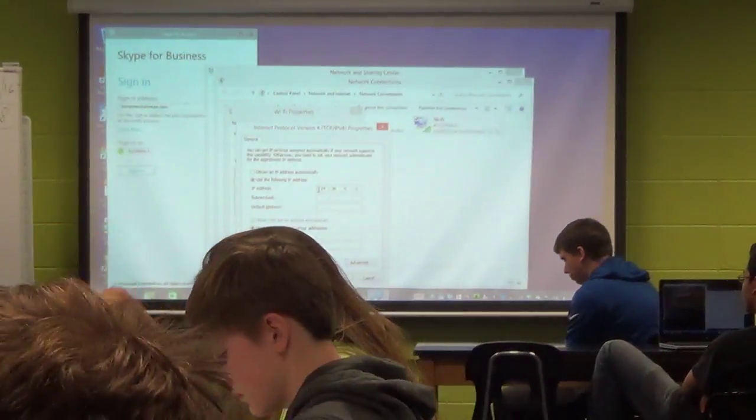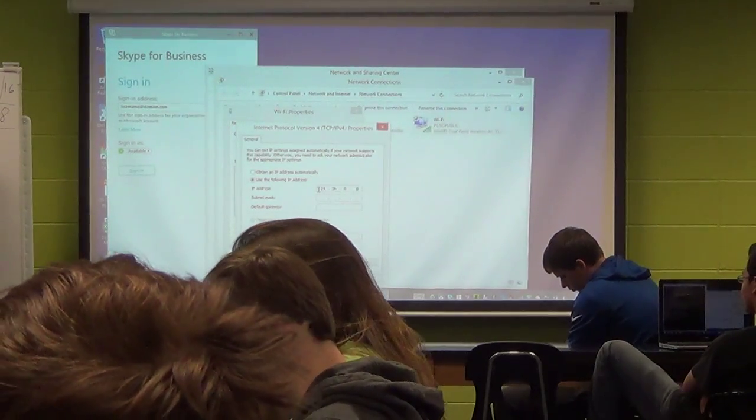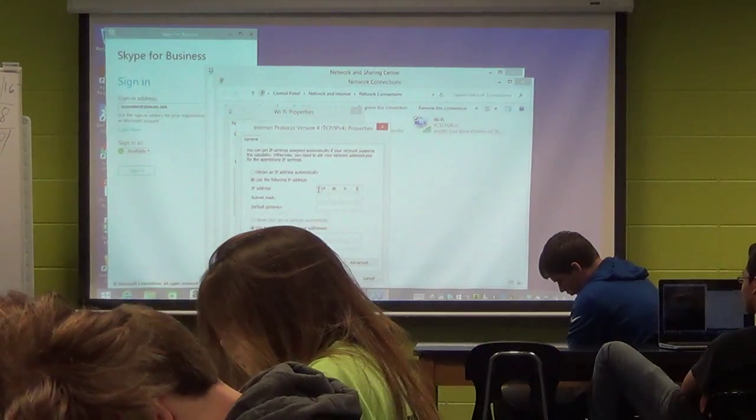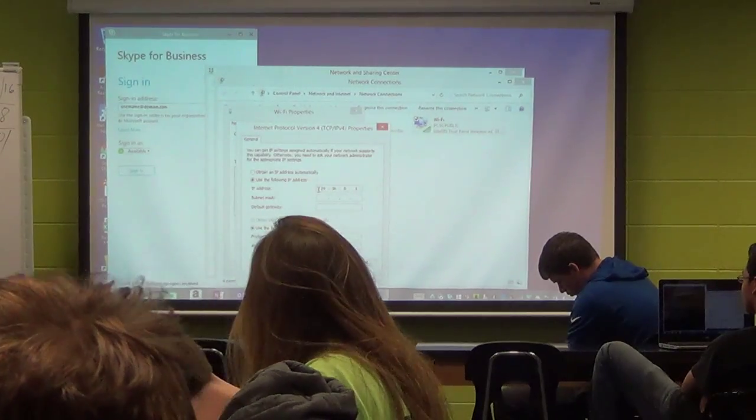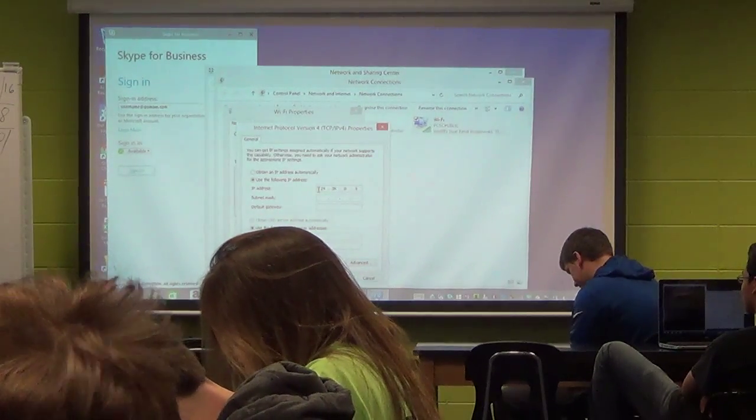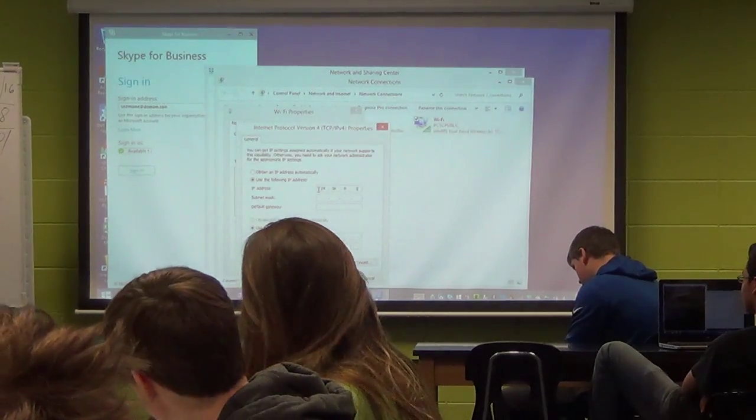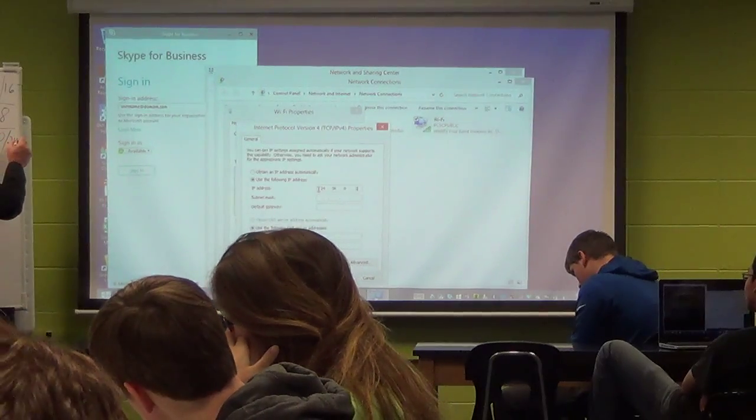192.168.0.0, but it's got a subnet mask of what? How many bits? 16? Not 16, even though you can use any of the guests? 24.